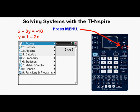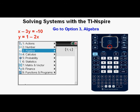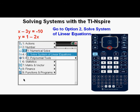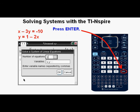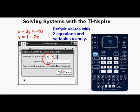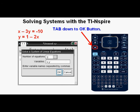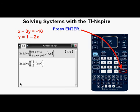Press the menu key. Go down to option 3, algebra. You could have also pressed 3. Press enter. Go down to 2, solve system of linear equations. Press enter. We see the solve a system of linear equations dialog box. We have the default value of two equations with the variables of x and y. So we tab down to the OK button. Press enter.